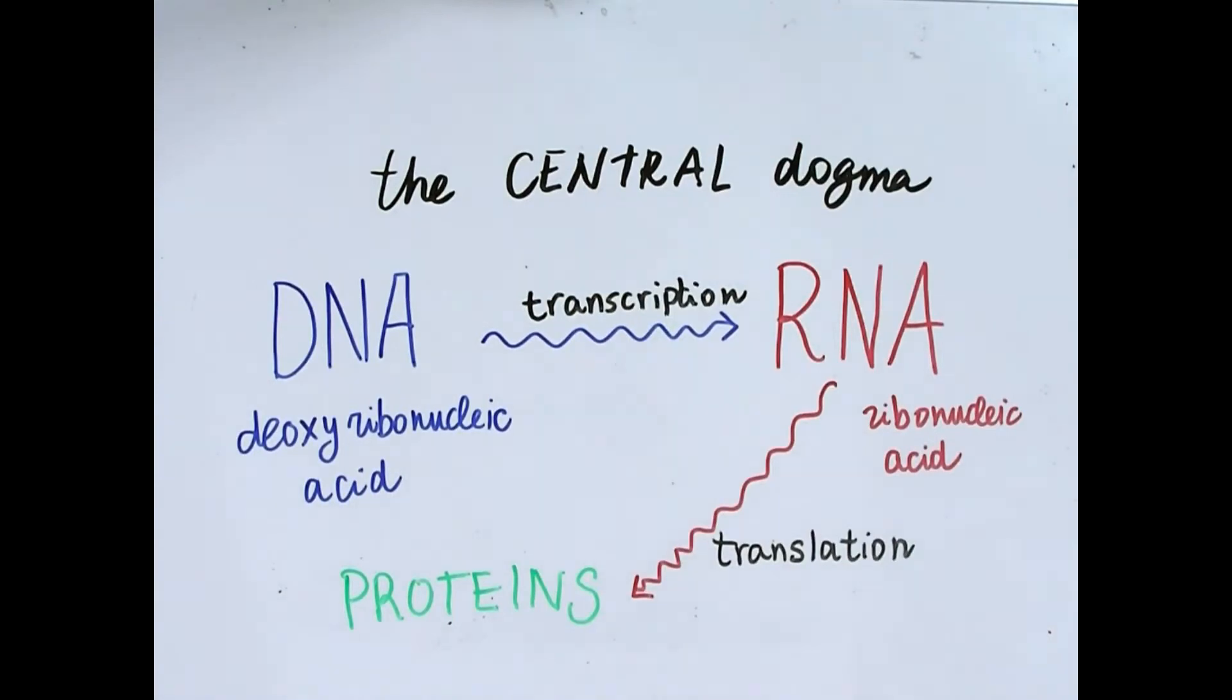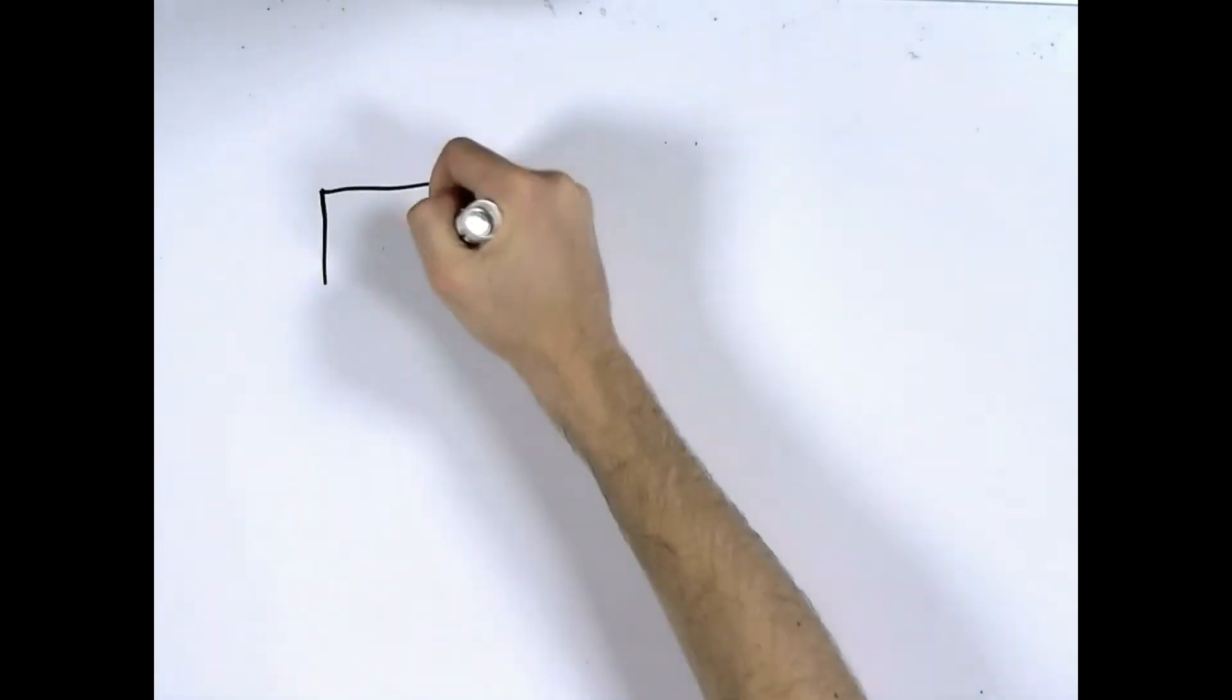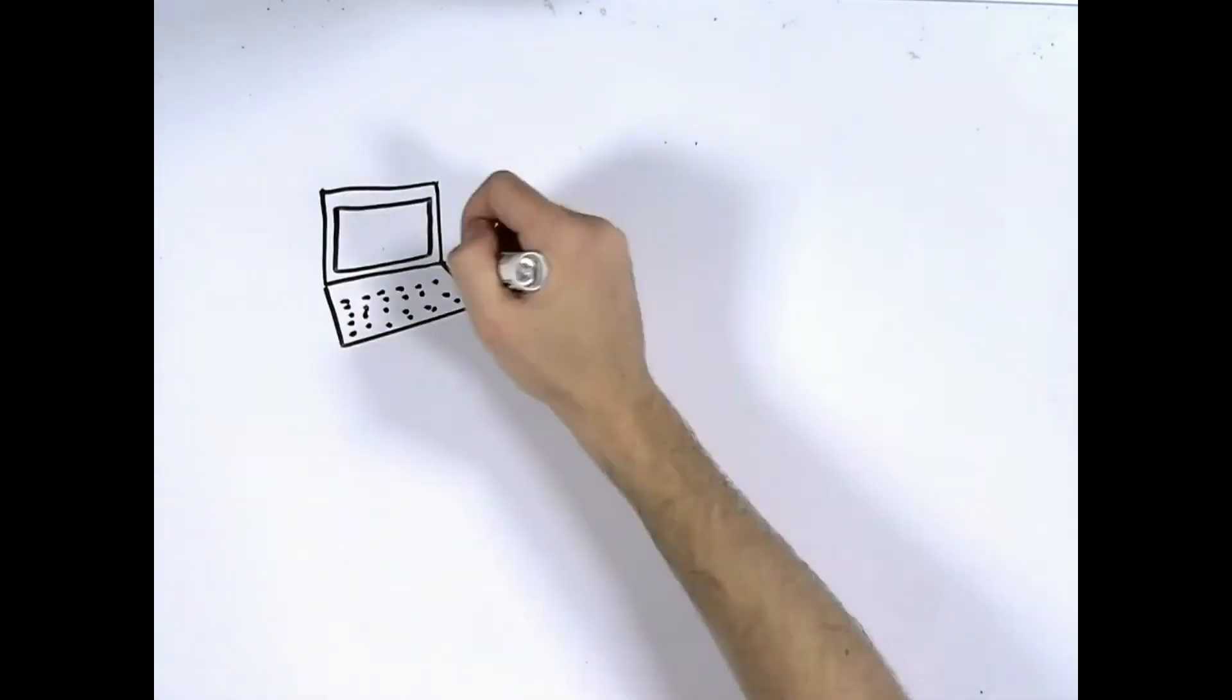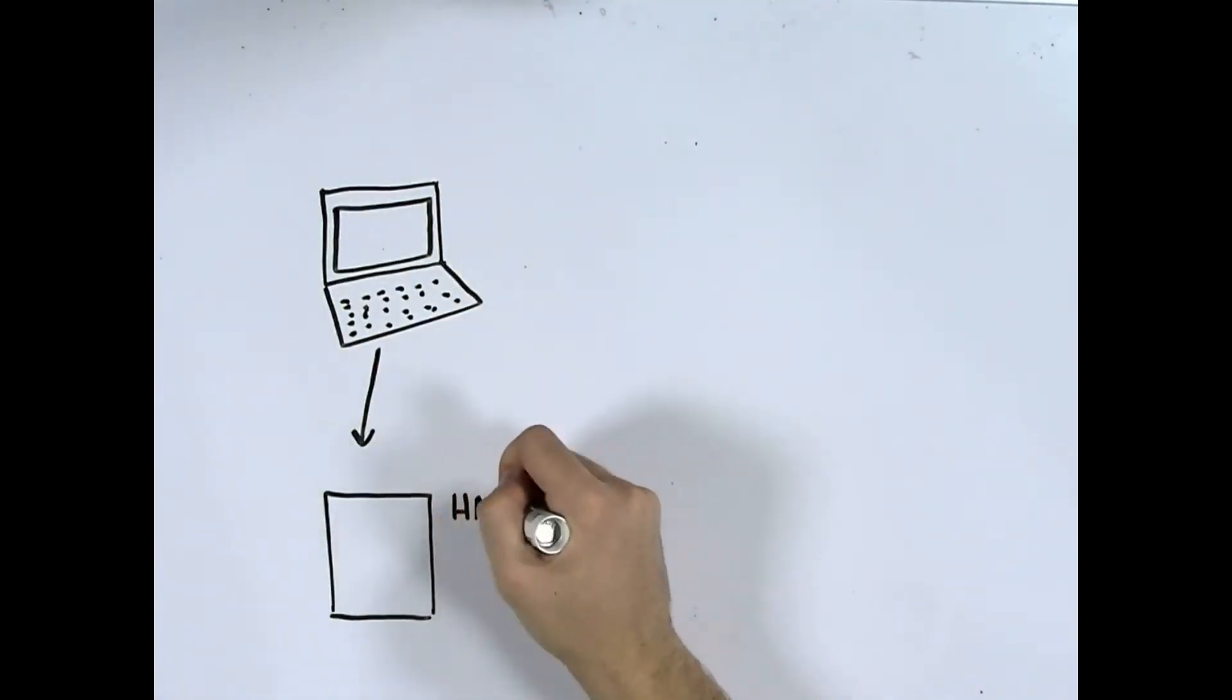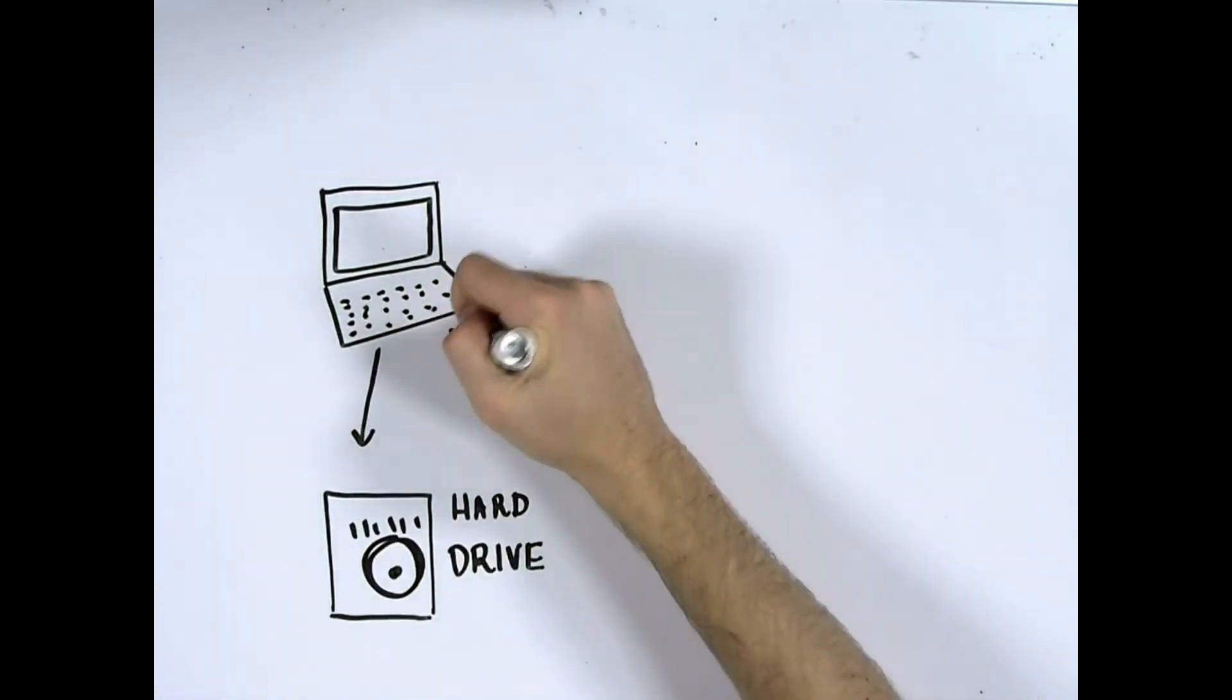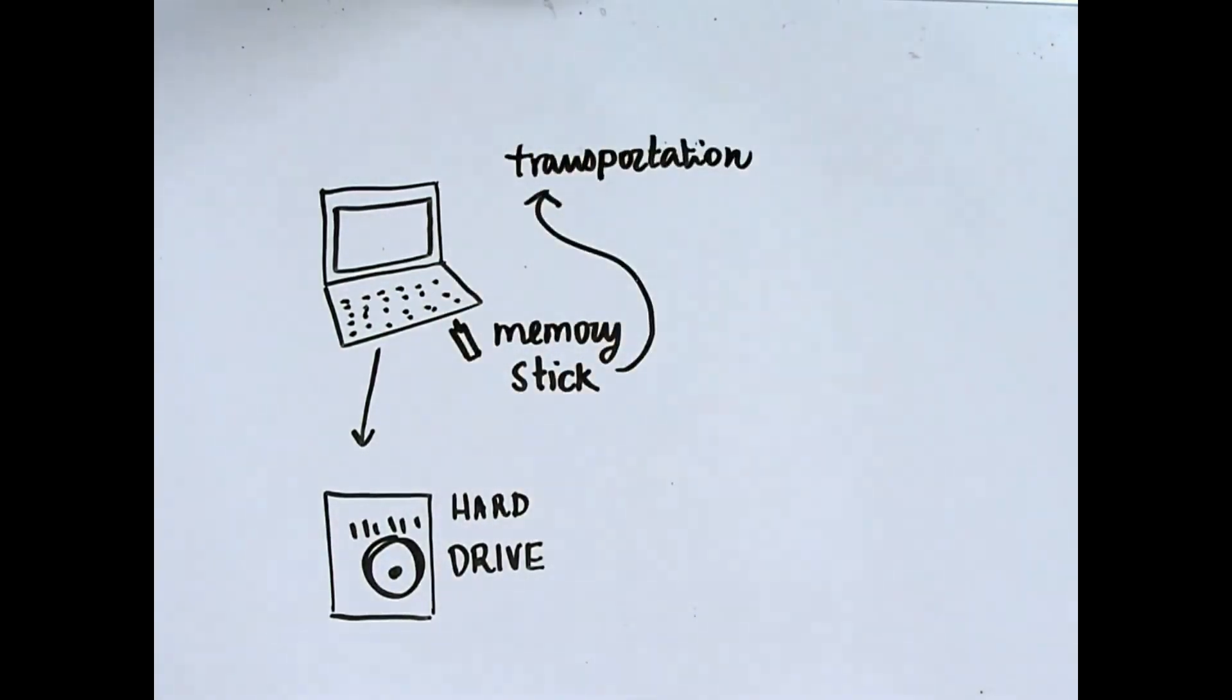DNA and RNA are both nucleic acids. Think of DNA like your hard drive and RNA as a memory stick. Genes in your DNA are like files on your computer's hard drive which need to be copied on a memory stick, which is the RNA, in order to be transported somewhere else.